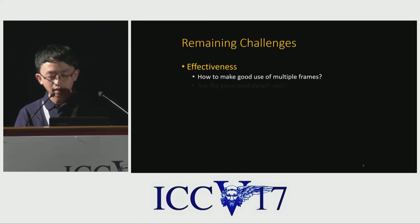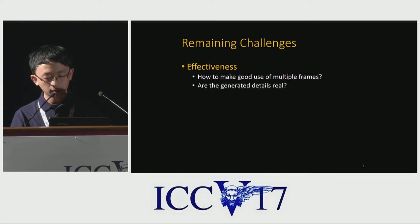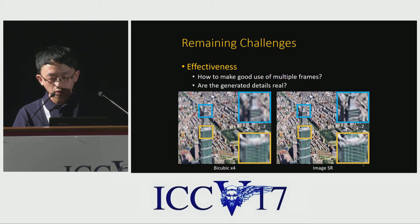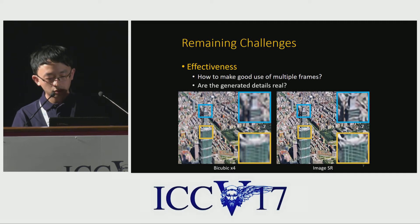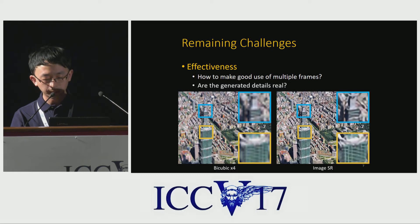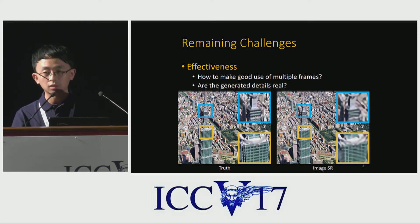On the other hand, are the generated details real details? We all know CNN-based methods incorporate external data. Using only one single frame, single image SR methods can also generate sharp structures. In this example, one single image SR method generates some clear window patterns on the building, but they are far from real. The problem is details from external data may not be true for this particular input image.